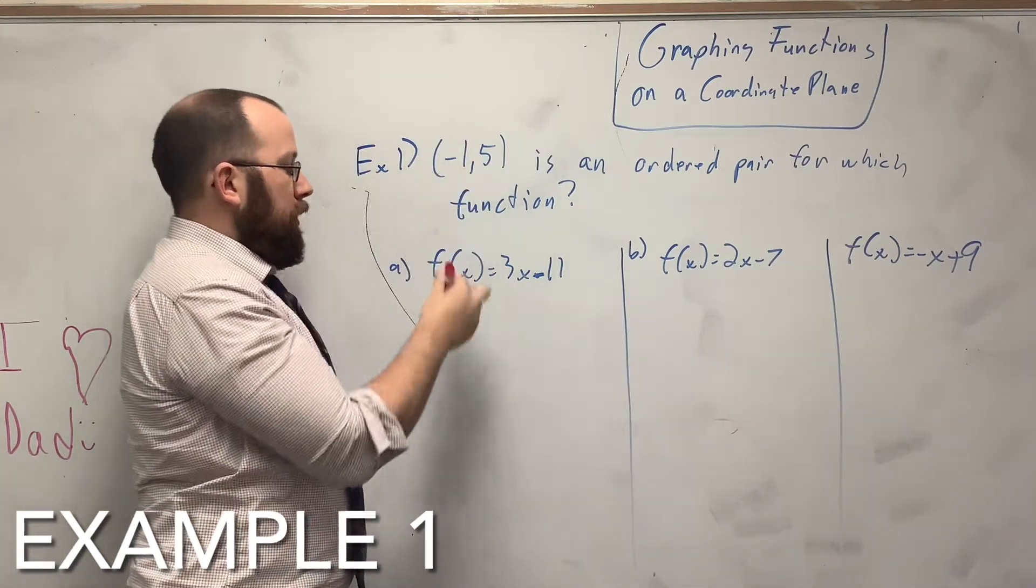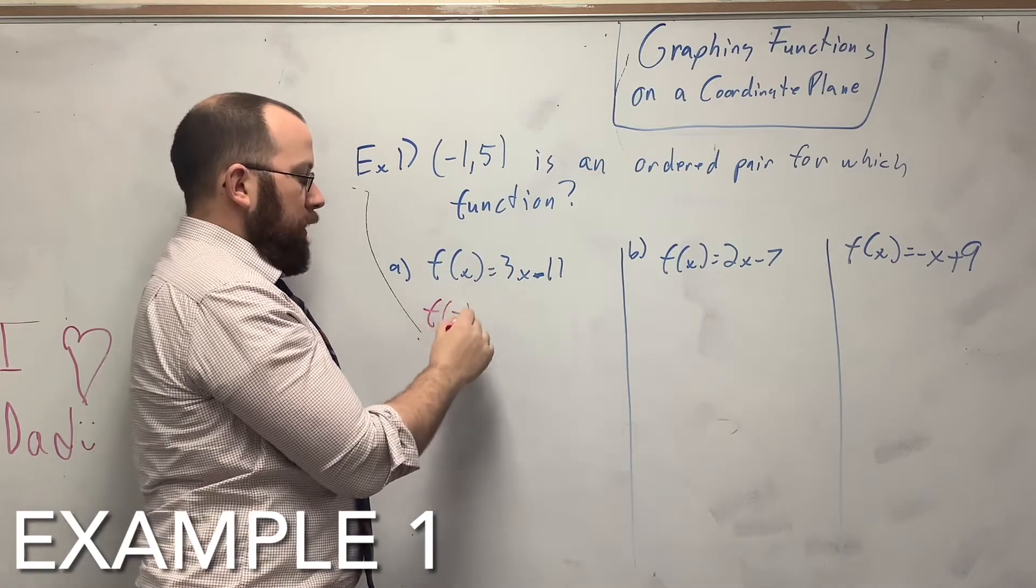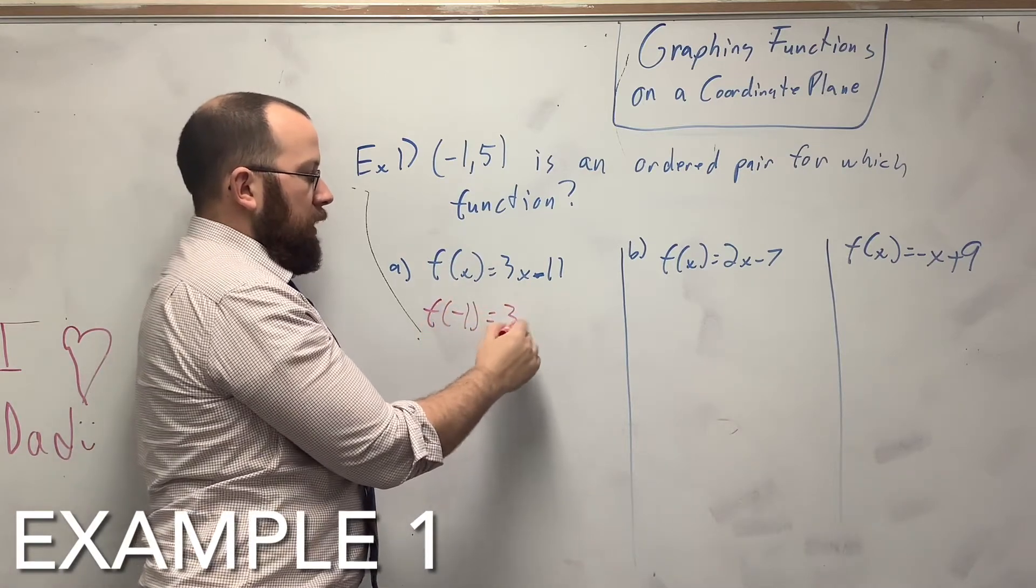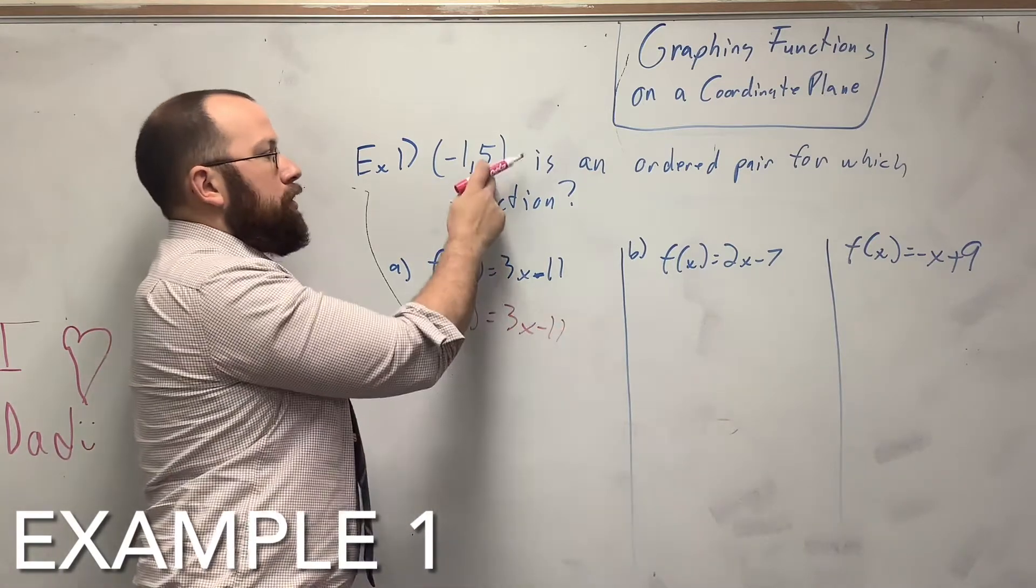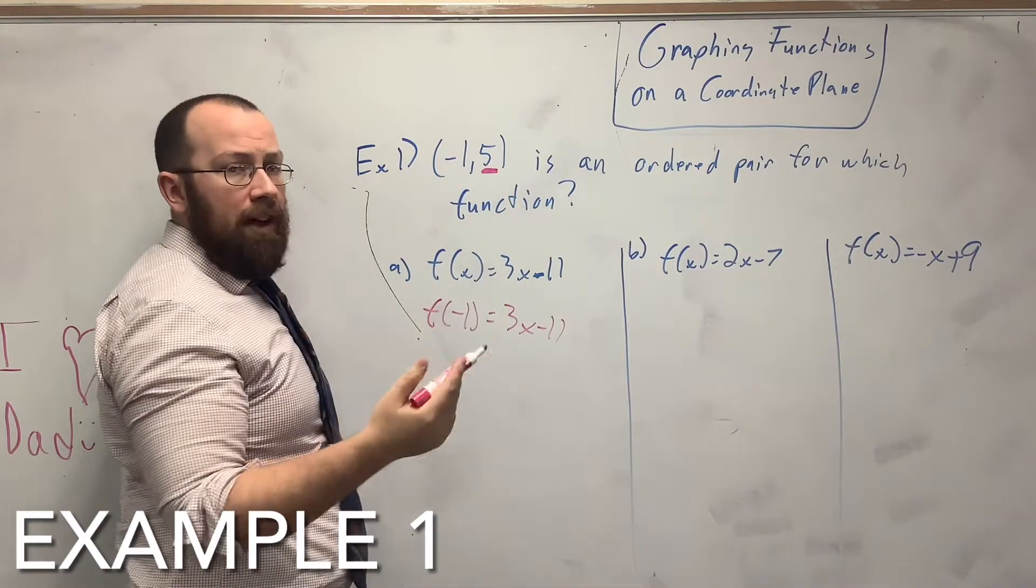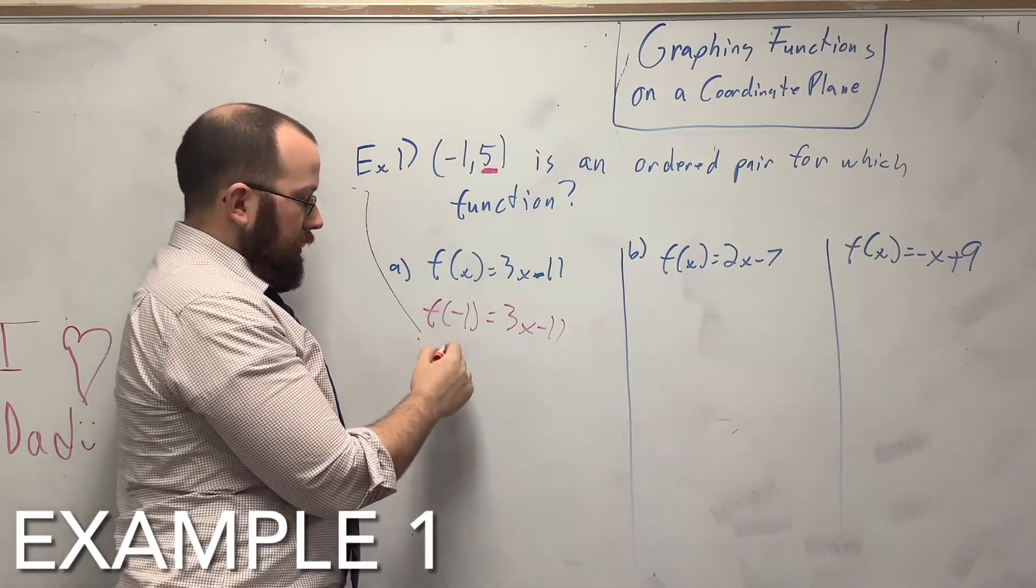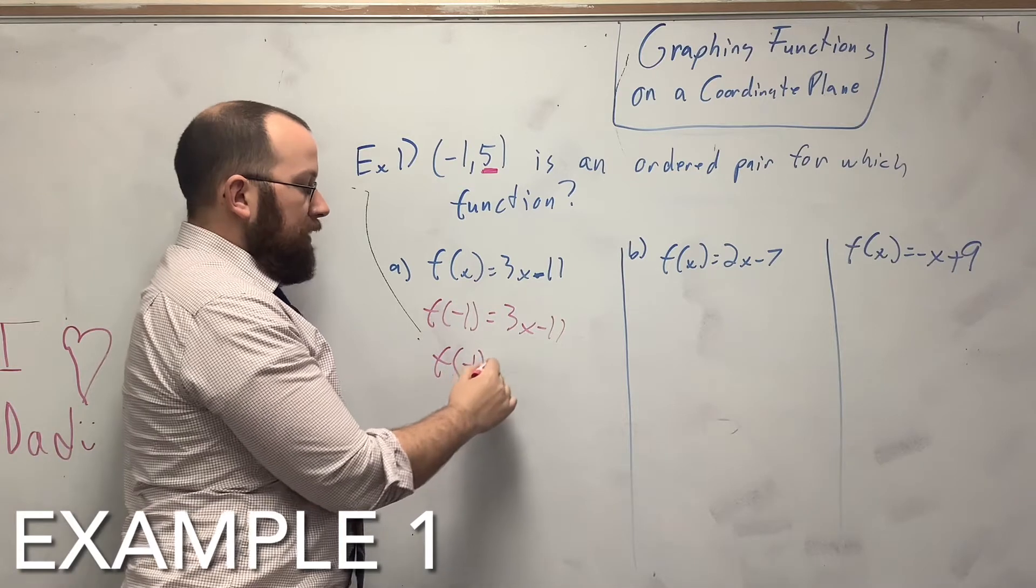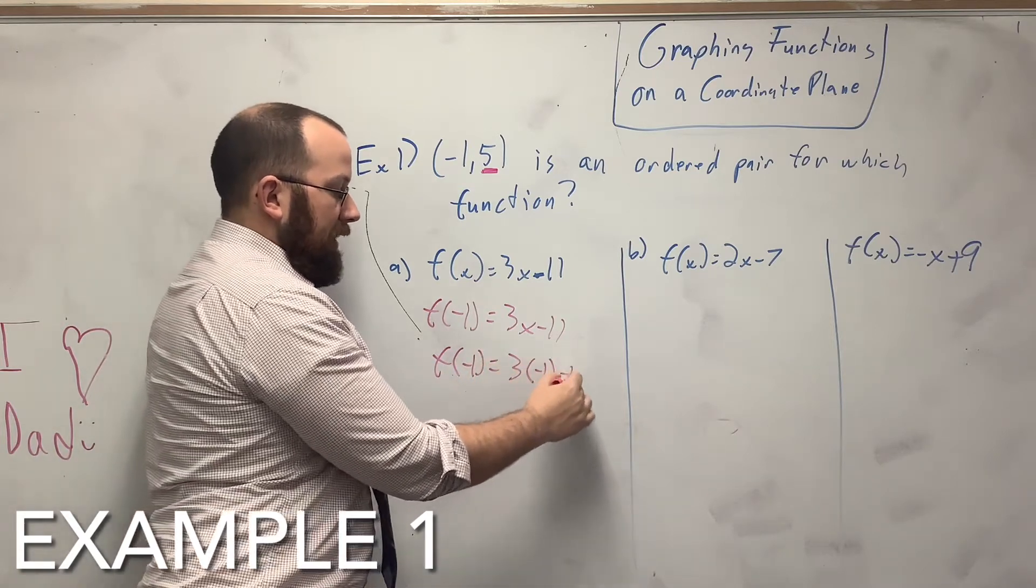I'll just plug in the negative 1. So, I'll say f of negative 1 equals 3x minus 11. So I should get 5 out. If I get 5 out, then I have the answer.